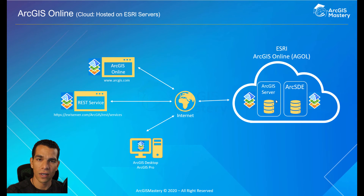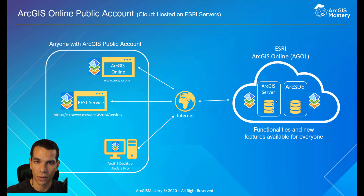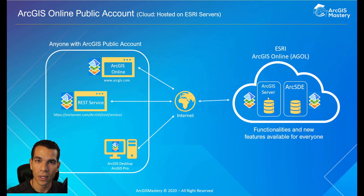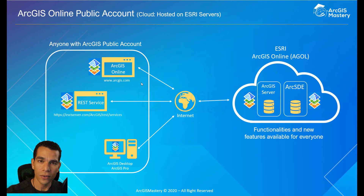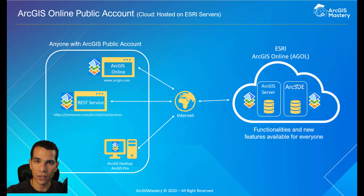That is the difference between ArcGIS Server and ArcGIS Online. ArcGIS Server is the product that hosts the maps; ArcGIS Online is the way you access servers on Esri's cloud service. Anyone with an ArcGIS Online public account can use the service for free. Esri continually adds new functionalities to ArcGIS Online, and any updates are available to anyone with a public account. You can go to www.arcgis.com to connect using your public account.